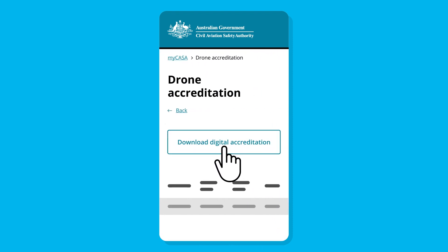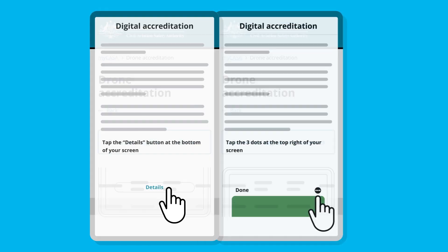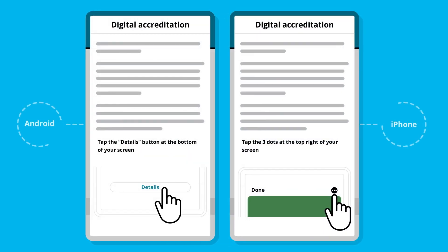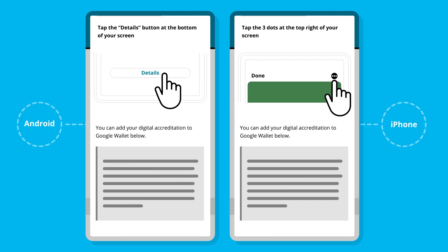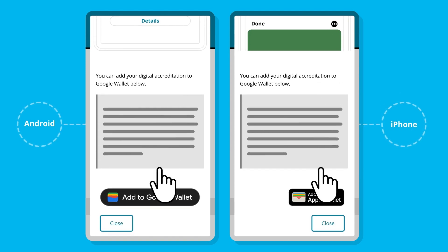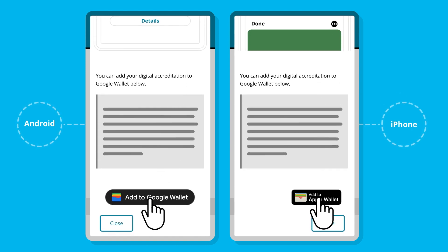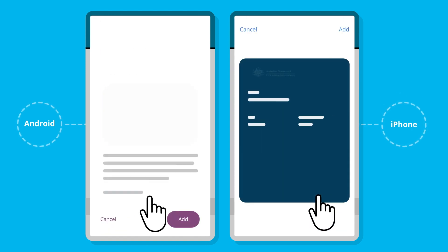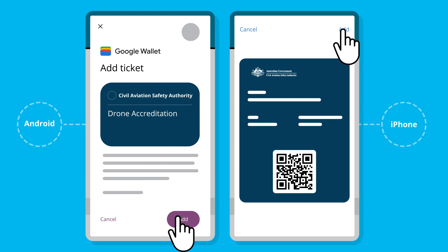Download your digital accreditation to your Apple Wallet or Google Pay. Read the instructions for your digital accreditation. Scroll to the bottom of the page and select Add to Wallet, then select Add.